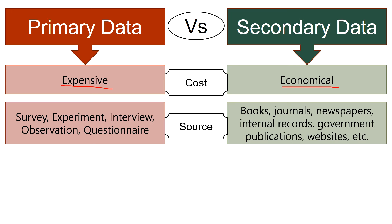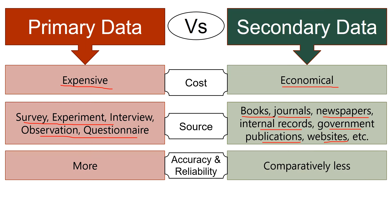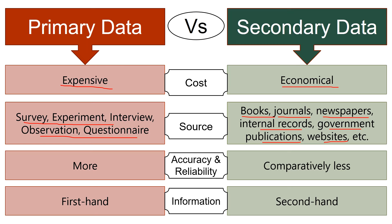Primary data can be collected through surveys, experiments, interviews, observation and questionnaire. On the contrary, secondary data can be collected through books, journals, newspapers, internal record, government publications, websites etc. Talking about accuracy and reliability, primary data is always more accurate and reliable as compared to secondary data. Primary data is also known as first-hand data whereas secondary data is also known as second-hand data.